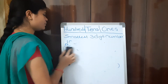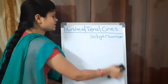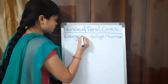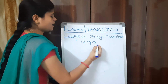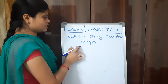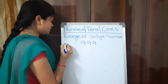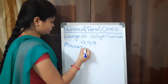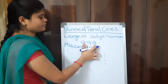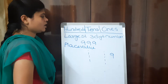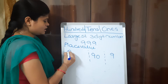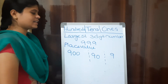What is the largest three-digit number? The largest three-digit number is 999. After 999, adding one more gives one thousand, which is a four-digit number. So 999 is the largest three-digit number. How do you represent 999 in place values? We have 9 ones, 9 tens (which is 90), and 9 hundreds (which is 900).